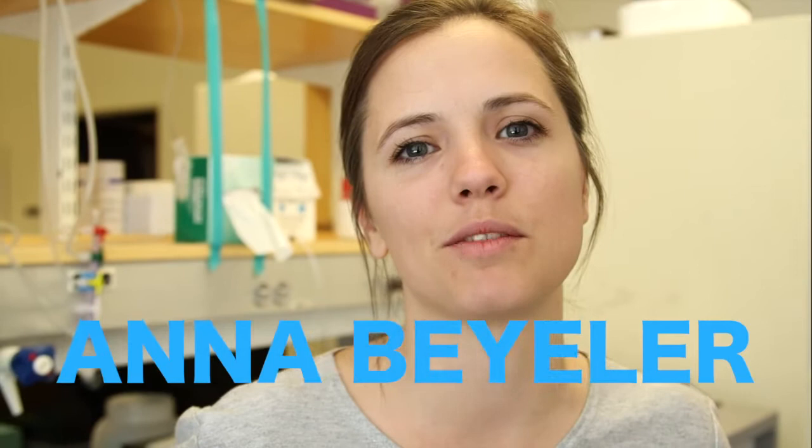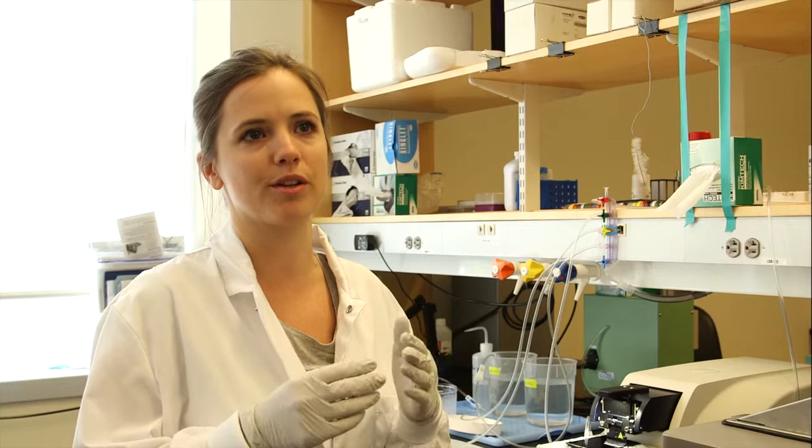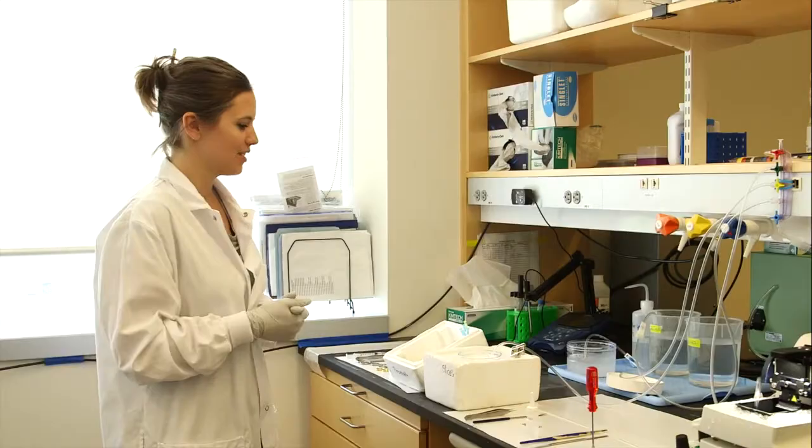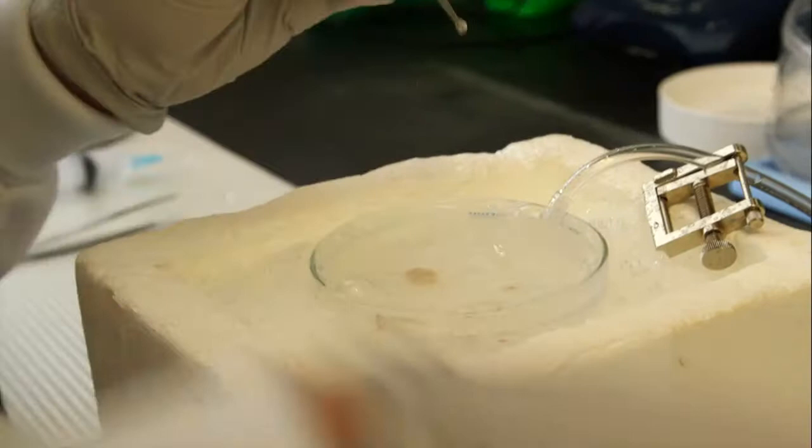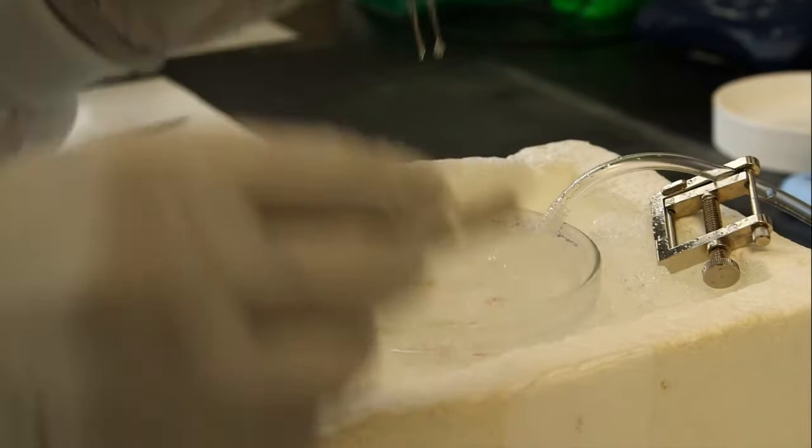I'm Anna Bailer, I'm a Swiss postdoctoral fellow in the lab of Kay Tai here at MIT. So today we're going to slice the amygdala, where there was a viral injection, and the ventral hippocampus, because we're going to patch cells in the ventral hippocampus and try to understand the input from the amygdala on these cells in the ventral hippocampus. So I'm going to start by extracting the brain with these tools, and then I'm going to section the cerebellum of the brain. So here's the brain in a cutting solution that contains high sucrose and low sodium concentration to prevent spiking.